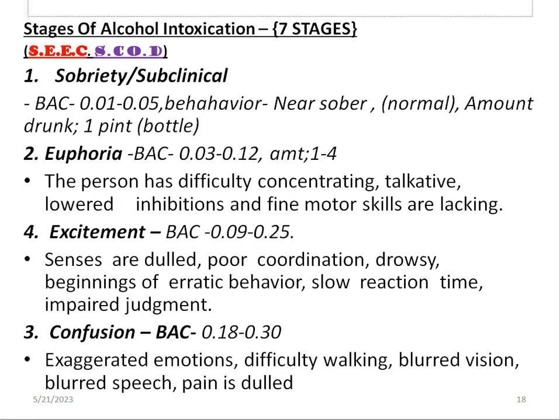There are seven stages of alcohol intoxication, remembered with the mnemonic SEXCOD: S for sobriety or subclinical, E for euphoria, X for excitement, C for confusion, O — wait, S for stupor, CO for coma, and D for death.